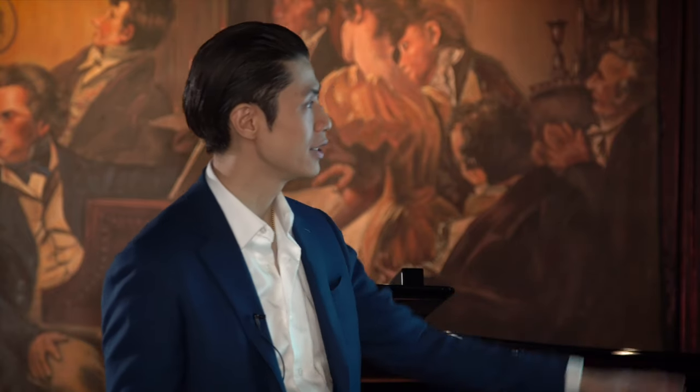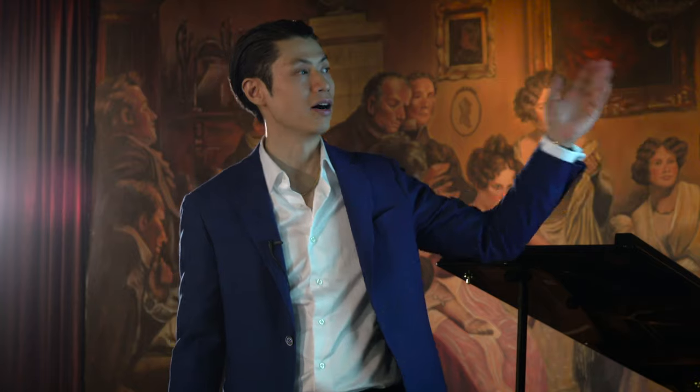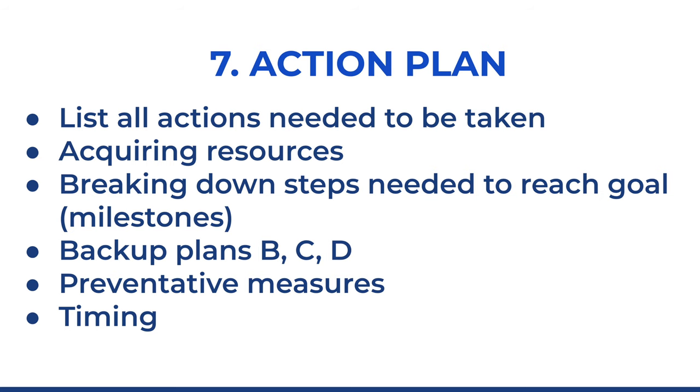Step seven is to create an action plan. Now you know what you need. List all the actions you need to take and how you're going to get those resources. Break down the steps to reach your goal. Set up milestones. Have backup plans — plan B, plan C, plan D. Have preventative measures. Figure out what your timing is. That's the action plan.